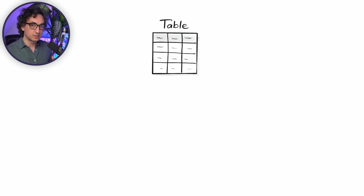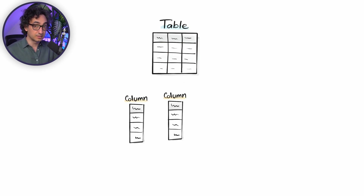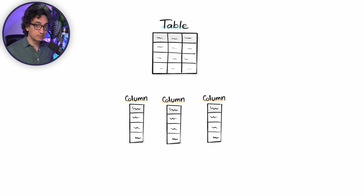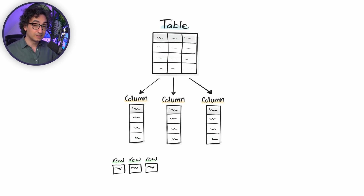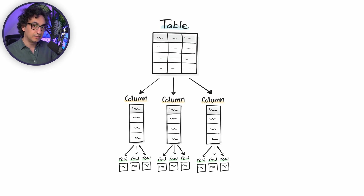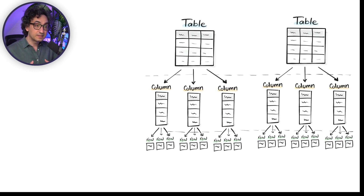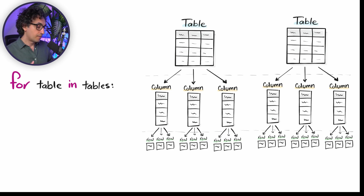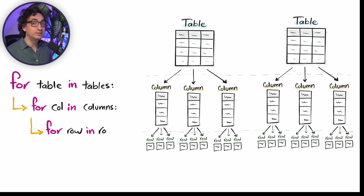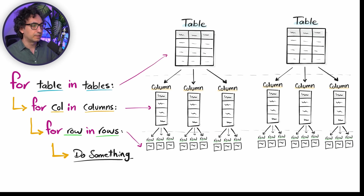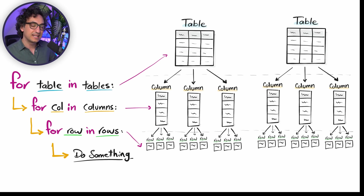In database concepts, data is stored in tables, columns, and rows. The table is the highest level in the hierarchy; drilling down gives you columns, and then rows with the actual data. To navigate this hierarchy we use nested loops: for table in tables, then for column in columns, then for row in rows — and at the end we do something like cleaning or preparing the data. This setup of three nested for loops is something you'll see in every data project.